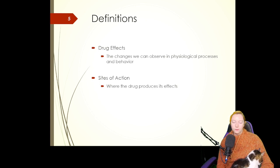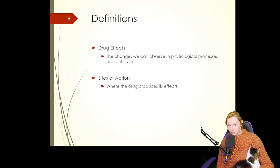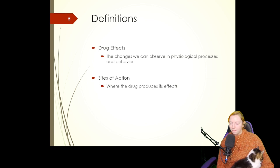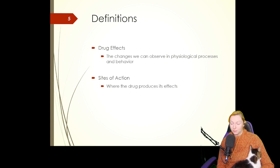The drug has to get to the organ or system to do the thing we want it to do. When thinking about medications for mental health, the drug has to actually penetrate into the central nervous system. There are a lot of barriers that need to be overcome for medications for mental health or epilepsy — anything in the central nervous system — and that includes the blood-brain barrier.